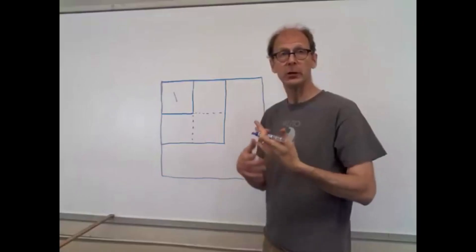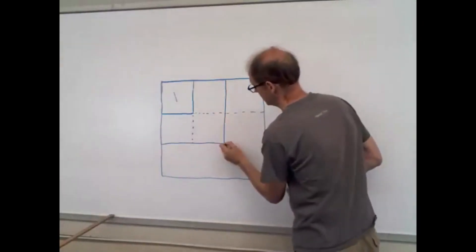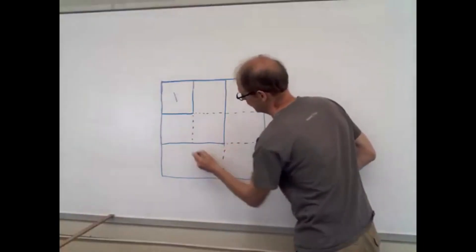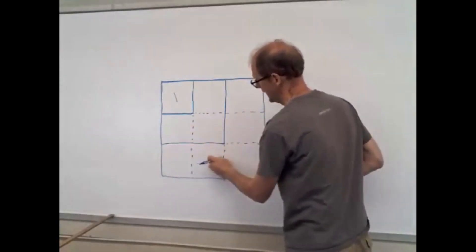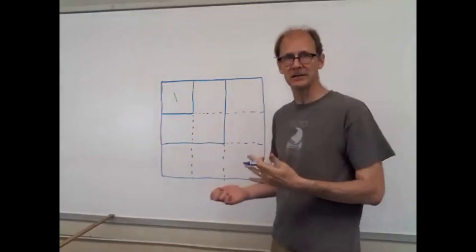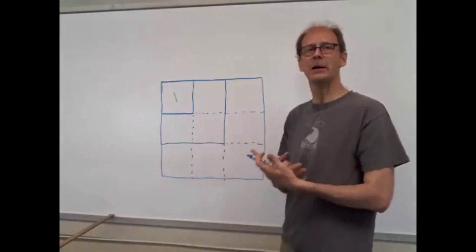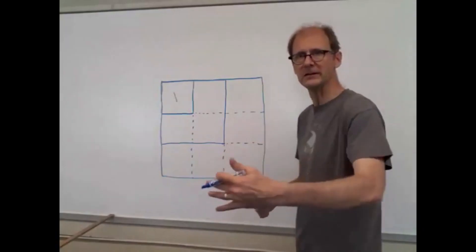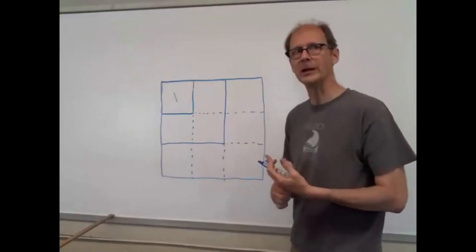And when I move the projector to three meters away, then that same amount of light was spread out over one, two, three, four, five, six, seven, eight, nine boxes. So the brightness of the light must be one ninth. If you triple the distance, the brightness of the light source becomes one ninth as great.